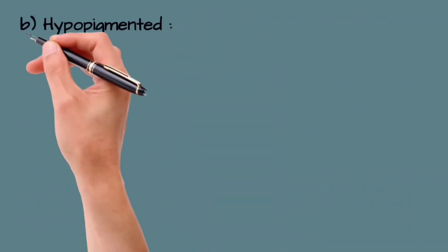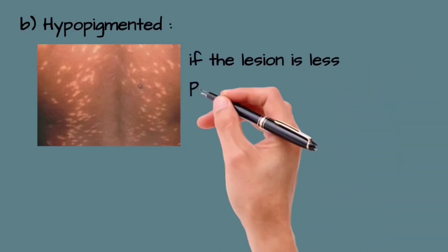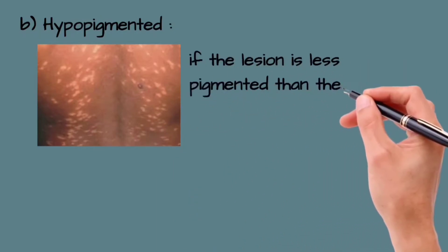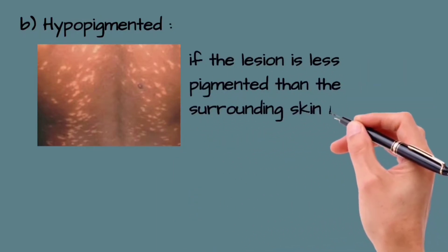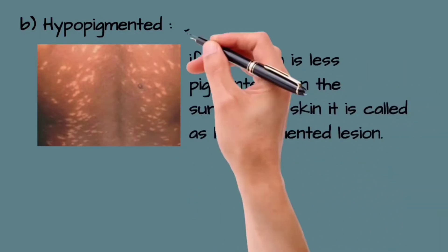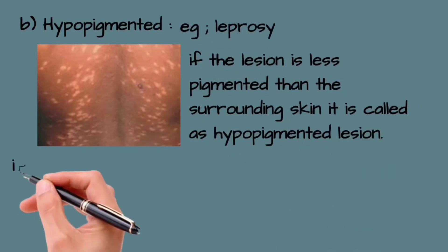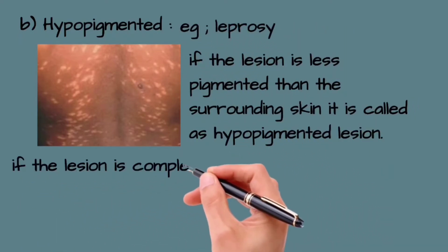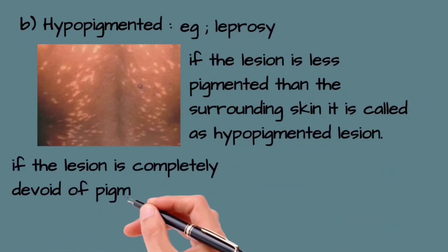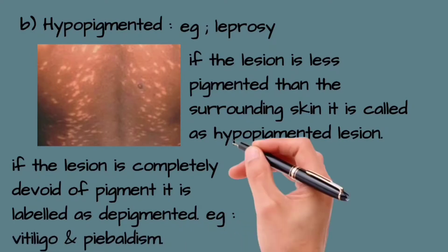If the lesion is less pigmented than the surrounding skin, it is called hypopigmented — example: leprosy. If the lesion is completely devoid of pigment, it is labeled as depigmented — example: vitiligo and piebaldism.